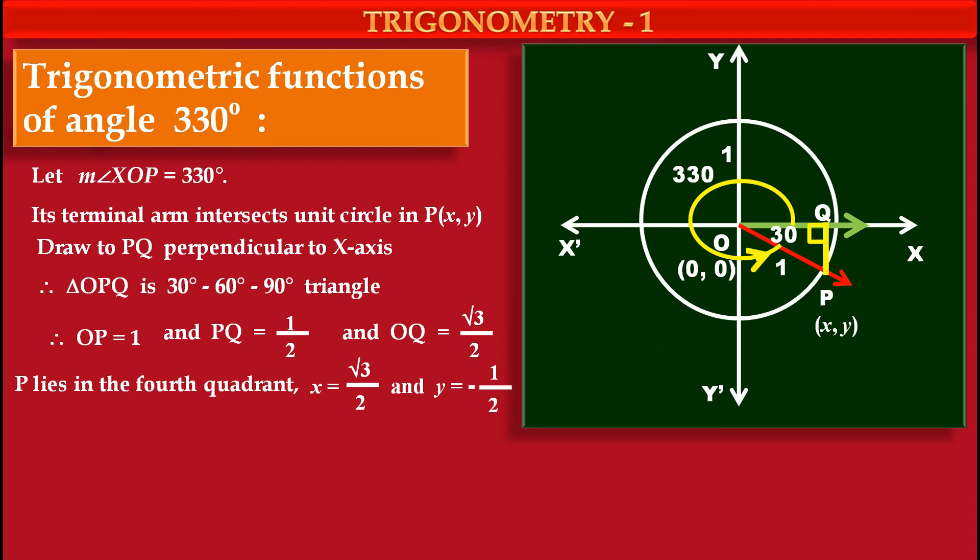And y coordinate y, its value is equal to distance on y-axis that is OP. And here OP is 1 upon 2. That's why y is equal to minus 1 upon 2 because of fourth quadrant. Sine is negative.